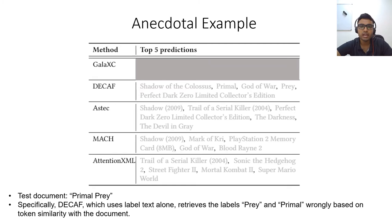Specifically, Decaf, which uses label text alone, retrieves the predictions Primal and Prey wrongly based on token similarity with the document.